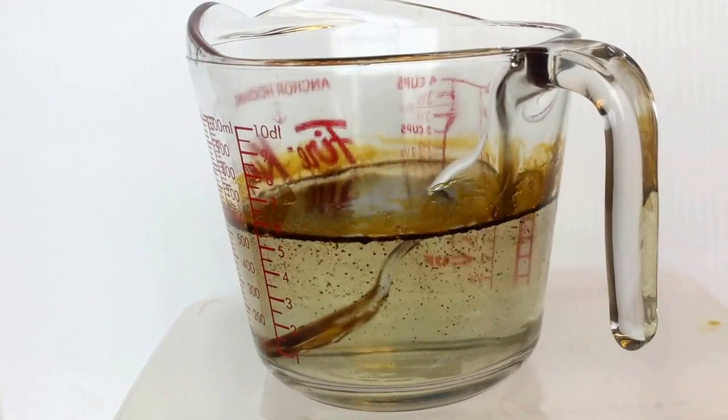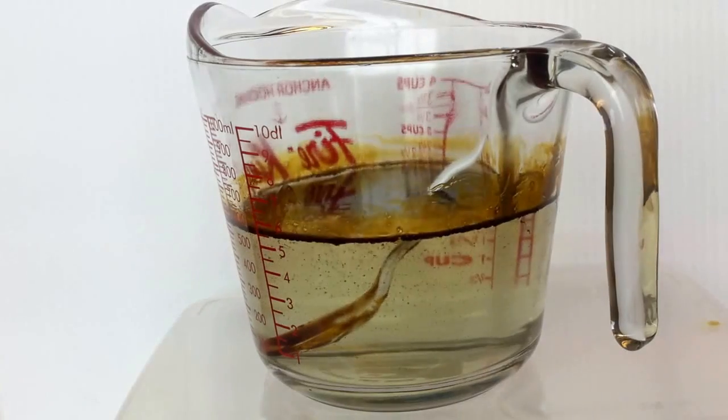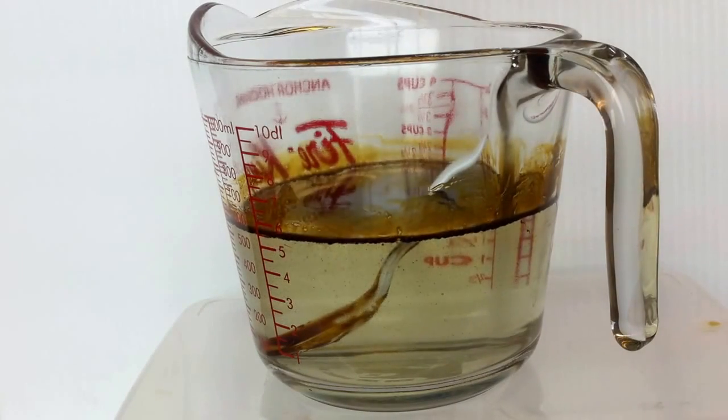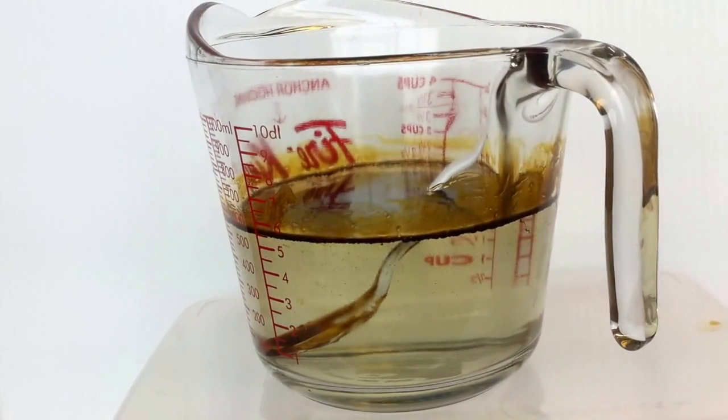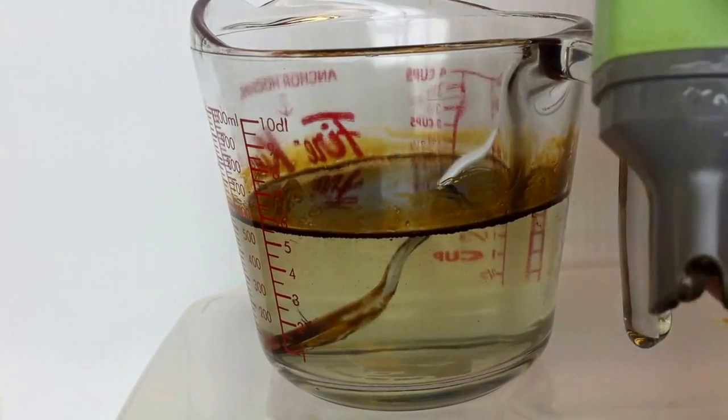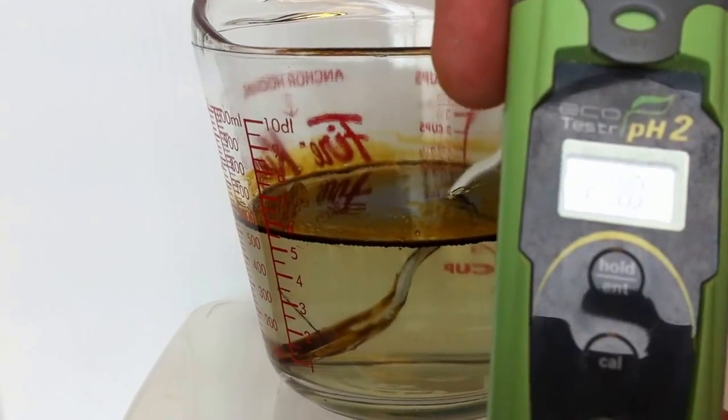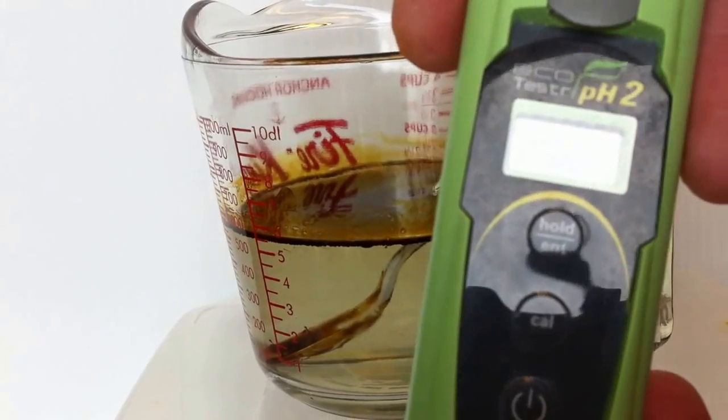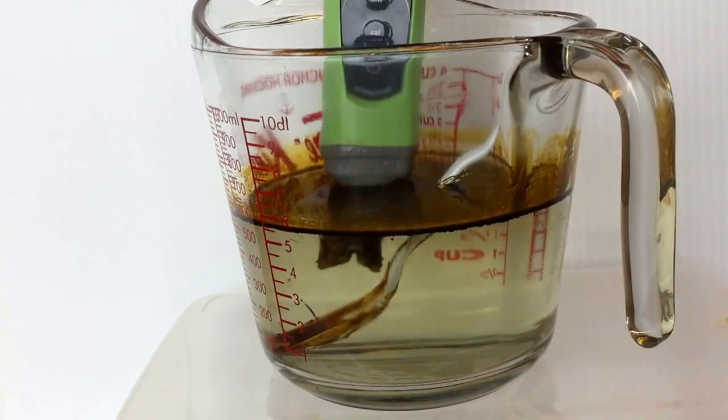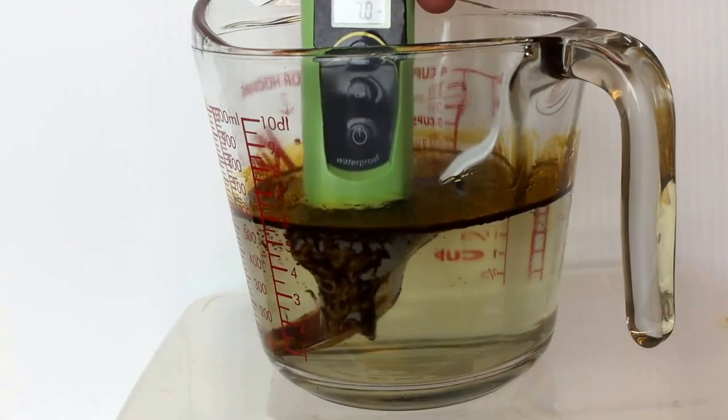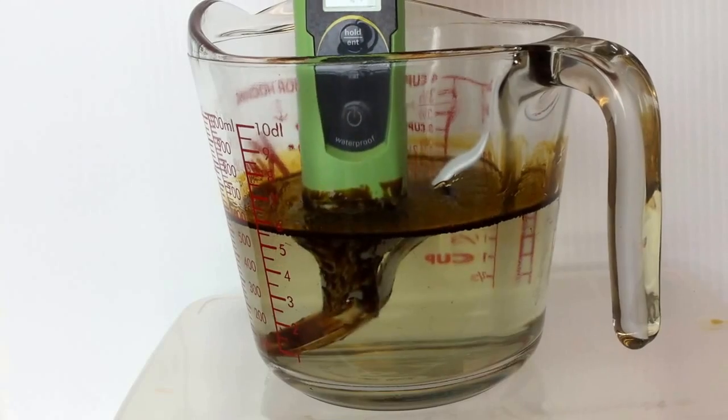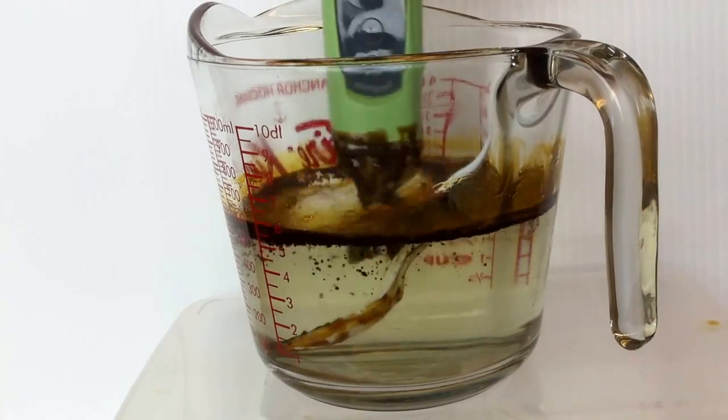Now let me check the pH first here. We'll take a pH meter and I'm just going to turn it on here. You can see this is a standard pH testing unit and I'm going to put it in the water. And you can see we have a pH of 7.4, so it's slightly alkaline.